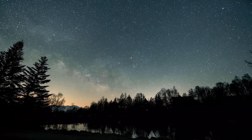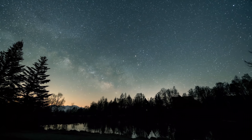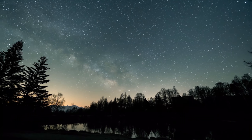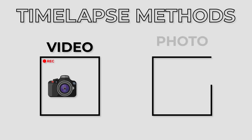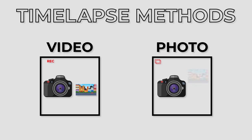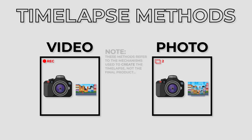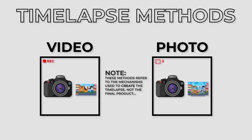Timelapse photography can be broken down into two flavors: video and photo. The types don't refer to the final timelapse project, which will always be in video format, but how the sequence is captured.